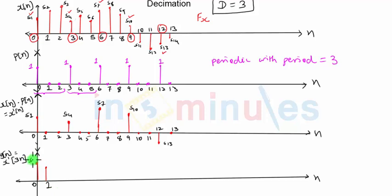Basically I am performing down-scaling operation. The next sample will be 4 by 3 and 5 by 3, which will be 0. 6 by 3 will be equal to 2, so the next sample will come here and this is for n equal to 2.